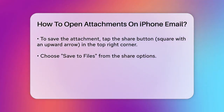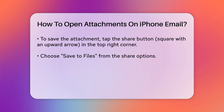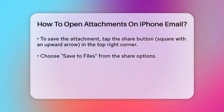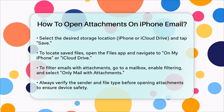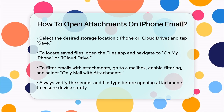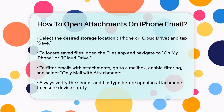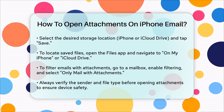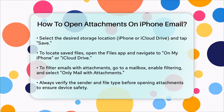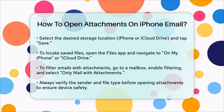Another useful tip is how to quickly find emails with attachments. In the Mail app, you can filter your emails to show only those with attachments. To do this, go to a mailbox, tap to turn on filtering, and then select 'Filtered By,' followed by 'Only Mail with Attachments.' This will show you all emails that have attachments.